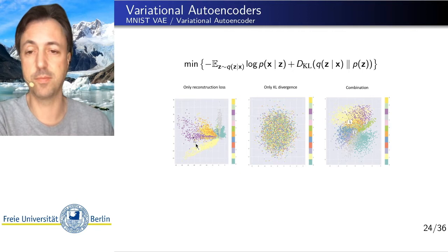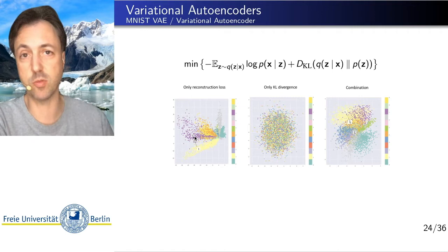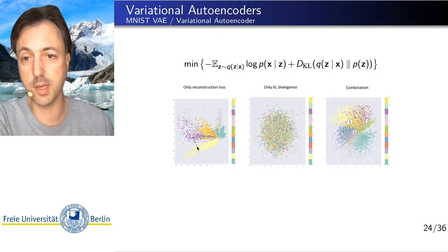So if we want to interpolate between a 1 and a 7, that should be quite close, because we just need to draw this one line of the 7 to go from 1 to 7. Well then if we go linearly here, then we would go through all of this empty space where we would not decode to anything meaningful.